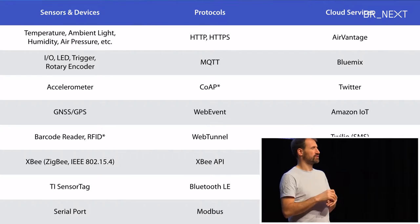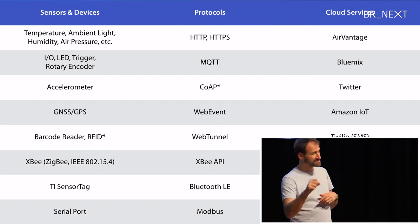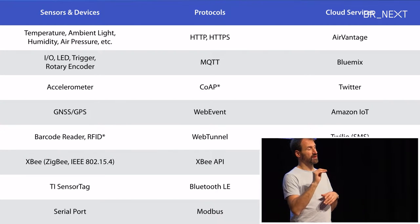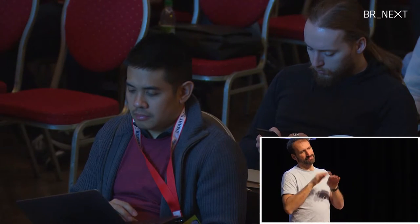These are the different sensors, devices, and protocols supported: typical sensors like temperature, humidity, and light sensors, GPIOs, LEDs, triggers and switches, dials, rotary encoders, accelerometers, GPS/GNSS receivers, and barcode readers. Protocols include HTTP/HTTPS, MQTT, and CoAP coming soon. CoAP is a lightweight protocol conceptually similar to HTTP REST but optimized for small devices and low-bandwidth networks — binary instead of text but using the same concepts as HTTP REST. You can also connect to different cloud services in the IoT space.